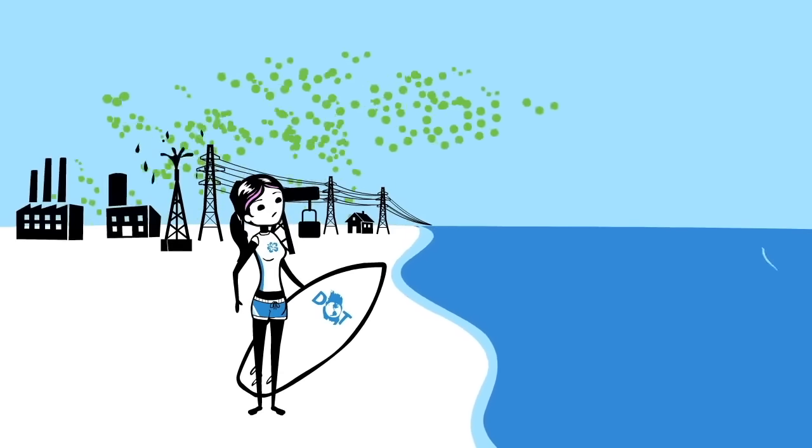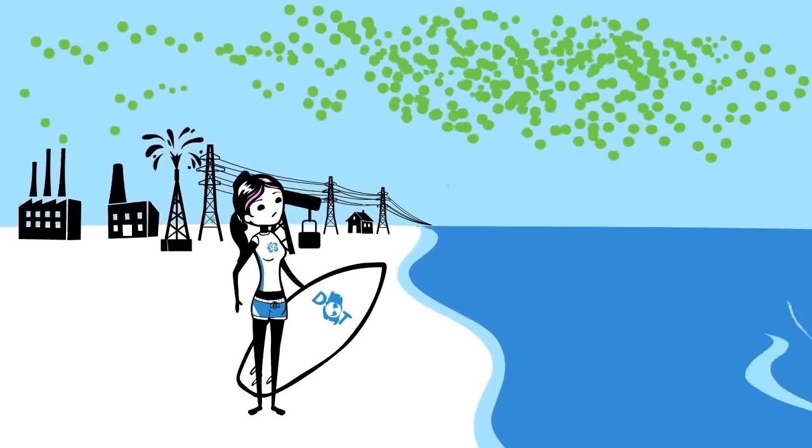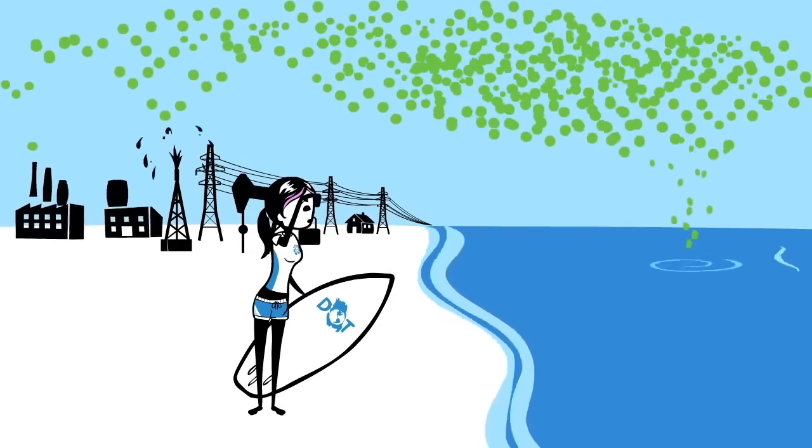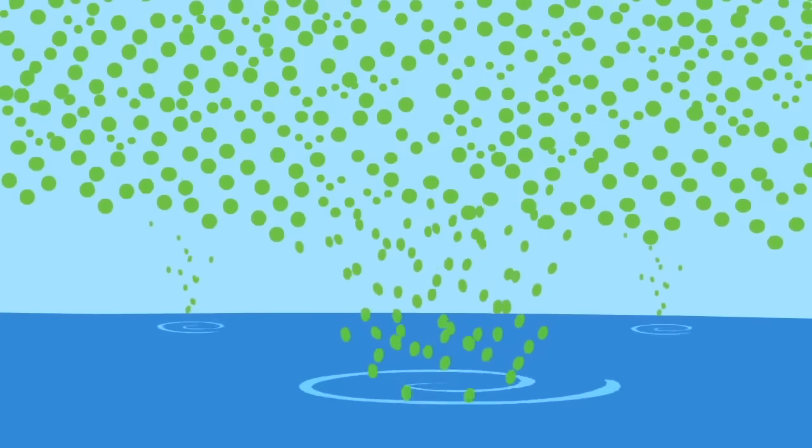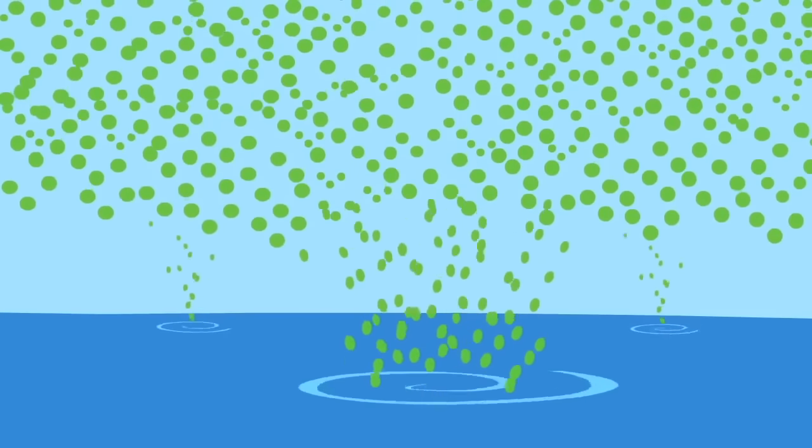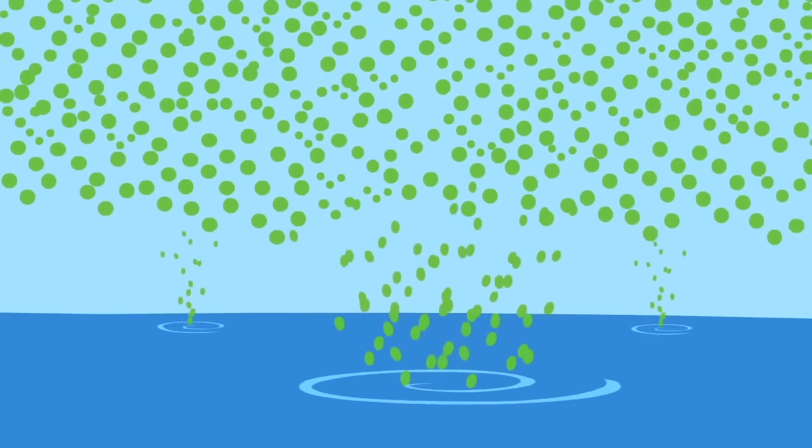Since we started burning fossil fuels, the ocean has absorbed about half of all the CO2 we humans have put out. That's why it's called the planet's biggest carbon sink. Now this is good, because it's kept a lot of CO2 out of the atmosphere.